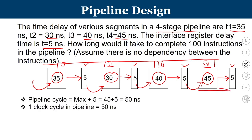The pipeline cycle time is the maximum stage delay plus 5 nanoseconds for the interface register delay. The maximum stage delay is T4 = 45 nanoseconds, so 45 + 5 = 50 nanoseconds is the pipeline cycle. One clock cycle in the pipeline is 50 nanoseconds. At every 50 nanoseconds, whatever is available in the previous pipeline register is read, processed, and then written. Reading from the pipeline register and triggering of new pipeline reads always happen at intervals of 50 nanoseconds.